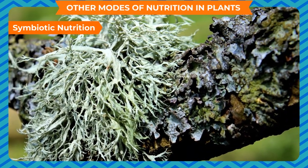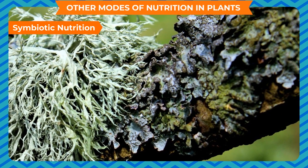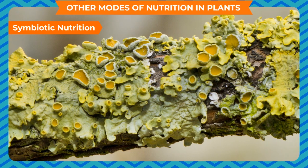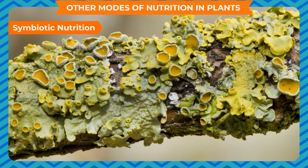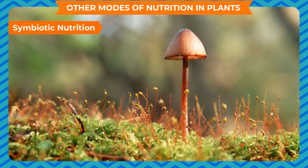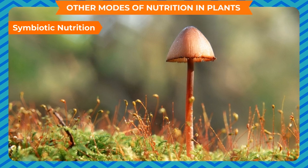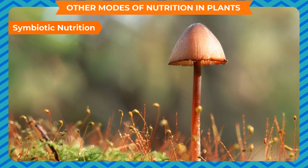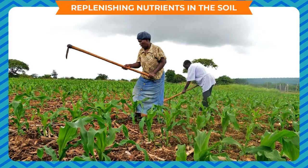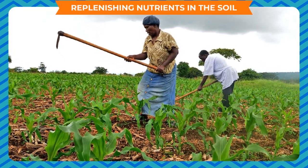Symbiotic nutrition: some organisms live together and share both shelter and nutrients — this relationship is called symbiotic. For example, fungi live inside the roots of some plants; the plants provide nutrients to the fungi, and in return fungi provide water and certain nutrients. In organisms called lichens, a chlorophyll-containing partner — an alga — and a fungus live together. The fungus provides shelter, water, and minerals to the alga, and in return the alga prepares and provides food for the fungus.